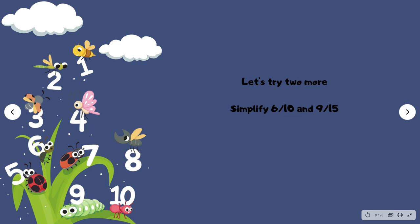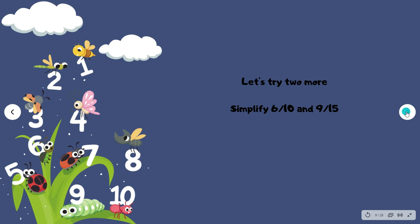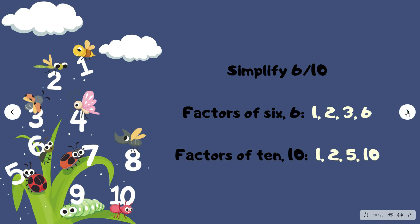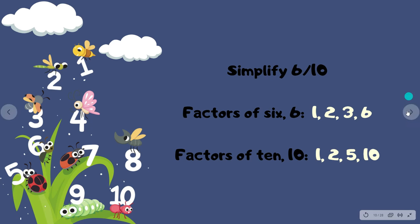Let's try 2 more. Simplify 6 over 10 and 9 over 15. You may pause this video to try this, or follow along. Let's simplify 6 over 10. Factors of 6 are equal to 1, 2, 3, and 6. Factors of 10 are equal to 1, 2, 5, and 10.